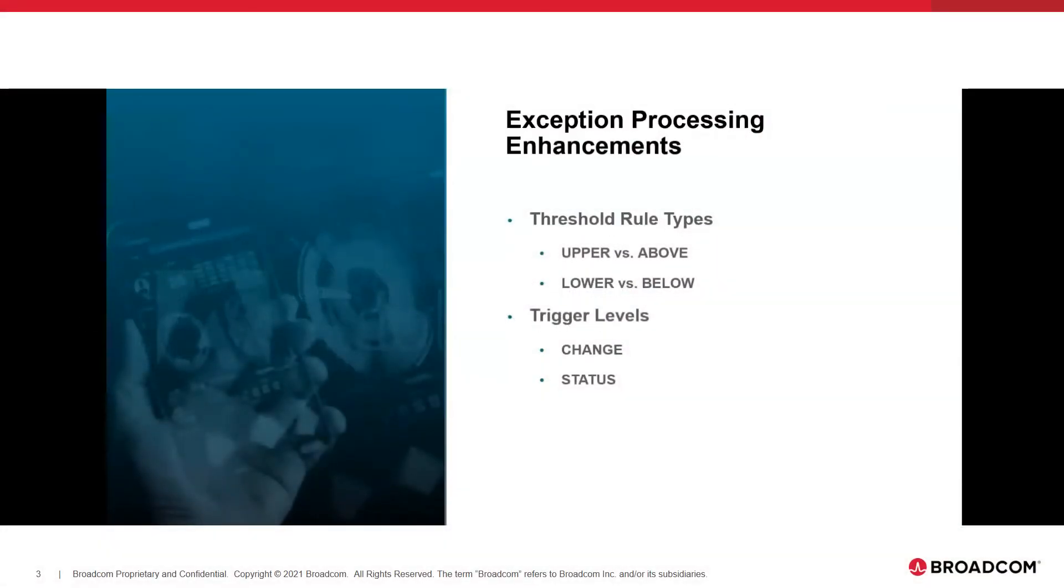What we're going to discuss today is some updates to exception processing that have come out of numerous customer requests or questions. There were maybe some misperceptions of how exception processing currently worked, but the misperceptions were actually good enhancement ideas as well. So we're trying to incorporate everything that everybody wants. What we're going to talk about is thresholding rule types today. We're adding a couple rule types known as above and below and how they compare to the existing rule types of upper and lower. Then we're going to move on to trigger levels, what they mean, and show you what a change, a status, and then a new one that we're calling not normal, how they all differentiate.